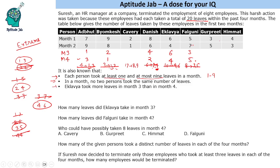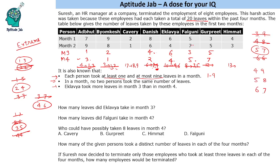We are left with Gurpreet and Himmat. For Gurpreet, we need to fill 12: options are 3,9 / 4,8 / 5,7 / 6,6. 6 is used once, 3 is used twice, 4 is used twice — so it will be 5 and 7, giving 7 in month 3 and 5 in month 4. For Himmat, we need to fill 13: options 4,9 / 5,8 / 6,7. 5 is used twice and 4 is used twice, so it has to be 6 and 7. Since 7 is used in month 3 for Gurpreet, we use 7 for Himmat in month 3 and 6 in month 4.